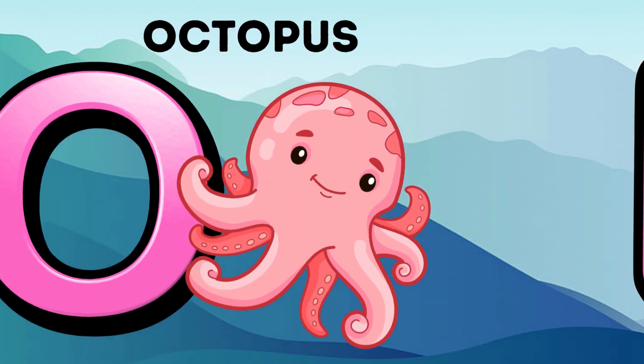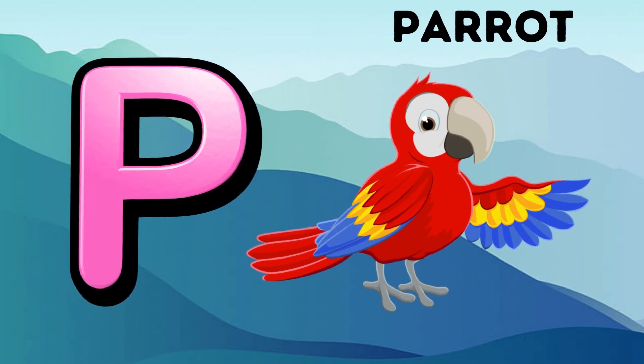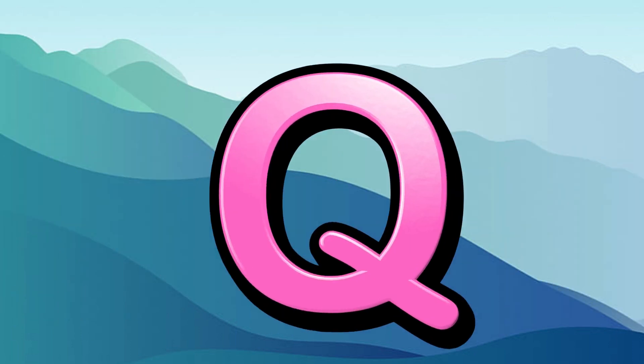O is for Octopus. A, A, Octopus. P is for Parrot. Pa, Pa, Parrot.